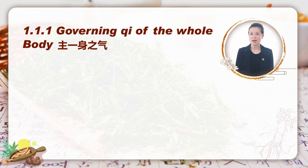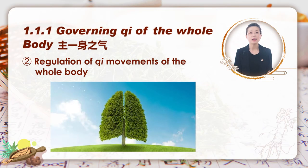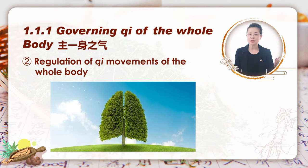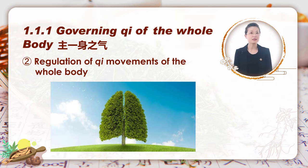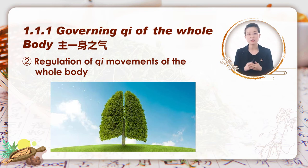On the other hand, lung governing qi of the whole body is also reflected in the regulation of qi movements. Movements of qi in the body are mainly classified into four forms: ascending, descending, entering, and exiting. In the breathing process, inhale is a demonstration of descending and entering, while exhale is ascending and exiting. Therefore, the regular respiration of lung can regulate the movement of qi and maintain a balance in qi movements.